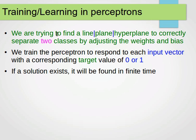So remember, the idea is we're trying to find a line or a plane or a hyperplane to correctly separate two classes which are separable by adjusting the weights and the bias. We train the perceptron to respond to each input vector, so we have our input data, we have several instances, some of them are of class 1, some of them are of class 0.